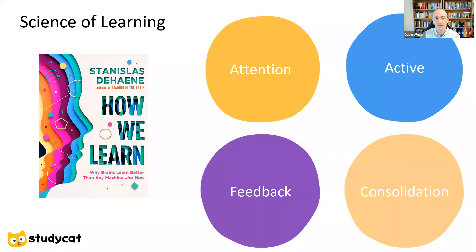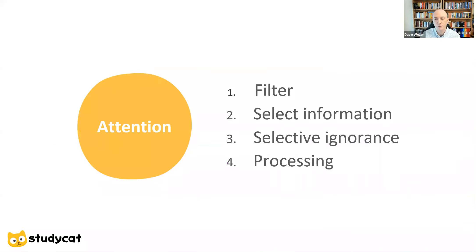Let's go through these one by one. First of all, we look at attention. From the brain's point of view, attention can be described as a filter that selects information to process while ignoring other data. This allows processing to happen and ensures that the brain doesn't get overwhelmed or have too much cognitive load. Just imagine that your brain gave equal attention to every piece of input — all the sounds, sights and smells — your brain would be quickly overwhelmed and you wouldn't be able to focus on anything.